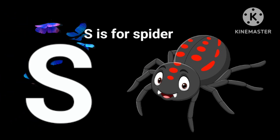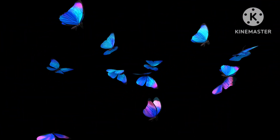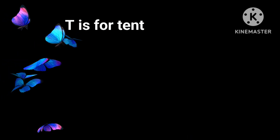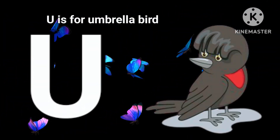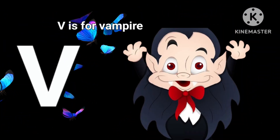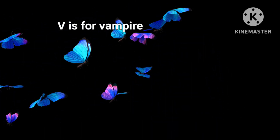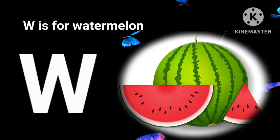S is for Spider. T is for Tent. U is for Umbrella Bird. V is for Vampire. W is for Watermelon.